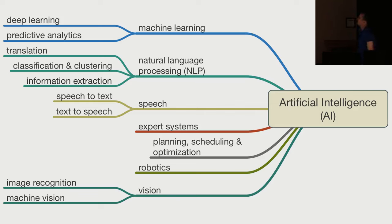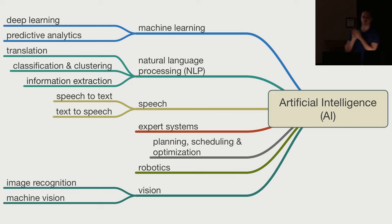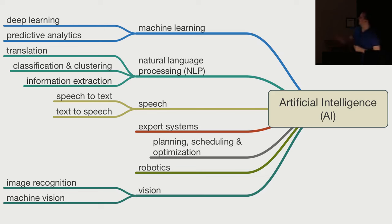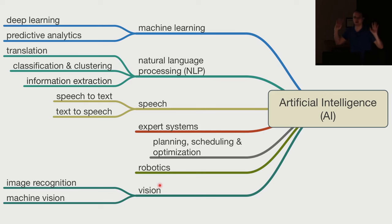We can categorize AI two ways: by the type of method being used, or by the domain being solved. Planning, scheduling, and optimization are techniques; text-to-speech is a domain. There's machine learning with subtopics like natural language processing, speech, expert systems, planning, heuristic search, robotics, and computer vision. Basically, if you're doing computer science in any way, shape, or form, you're doing AI these days.